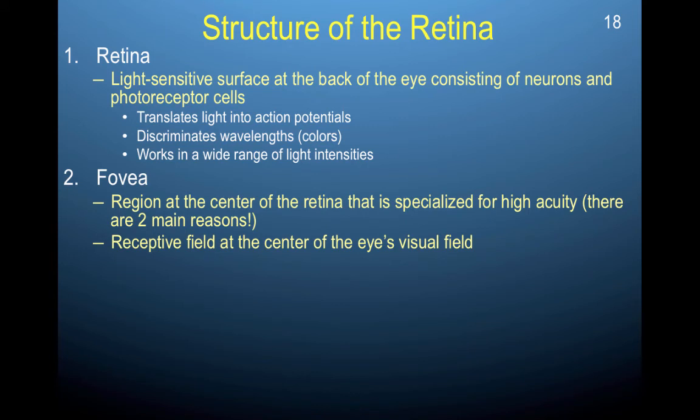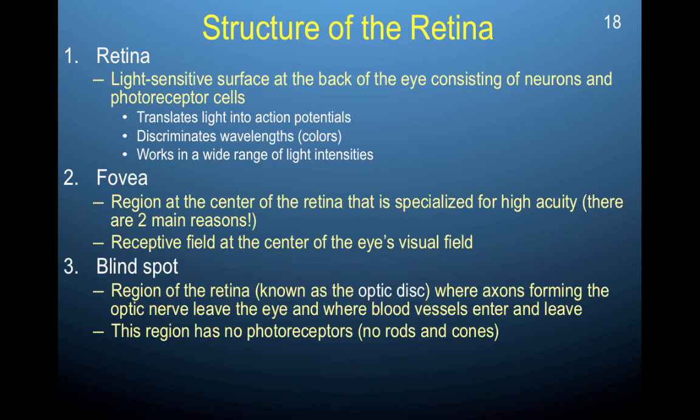The fovea is the region at the center of the retina that is specialized for high acuity. This region at the center is specialized for high acuity, and there are two main reasons. And I'll be talking a little bit more about why you have highest visual acuity in the fovea in the next couple of slides. And then again, I also mentioned that everybody has a blind spot. So the region of the retina known as the optic disc, this is where axons forming the optic nerve leave the eye, and where blood vessels enter and leave. So this region has no photoreceptors. It has no rods and cones. So it cannot actually perceive or can actually sense any information from the environment in a blind spot.